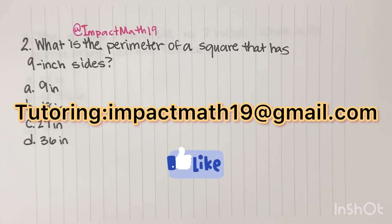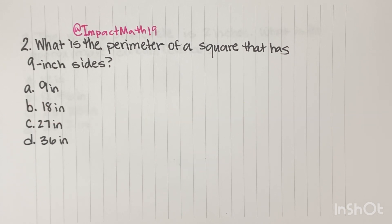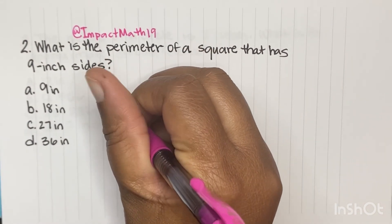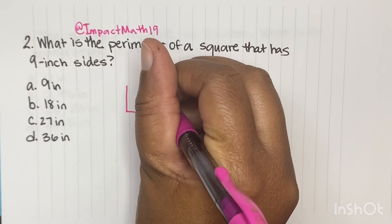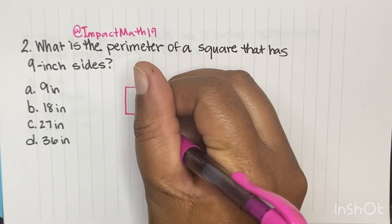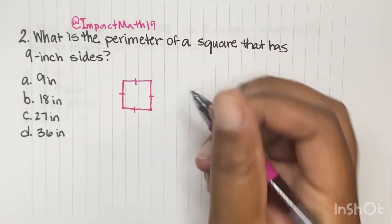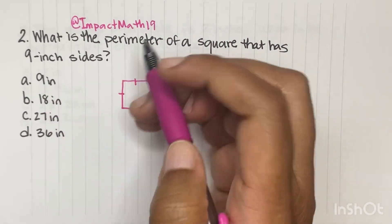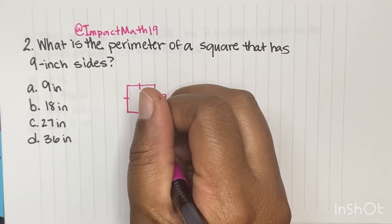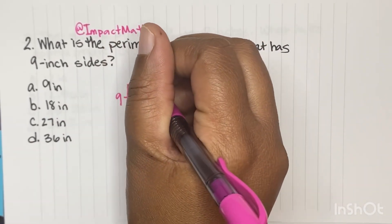What is the perimeter of a square that has 9 inch sides? So what I always tell my students to do is make sure you draw the picture. You have to understand what a square is. Remember, a square is where all the sides are the same. So if they say that has a 9 inch side, this is 9, this is 9, this is 9, and this is 9.